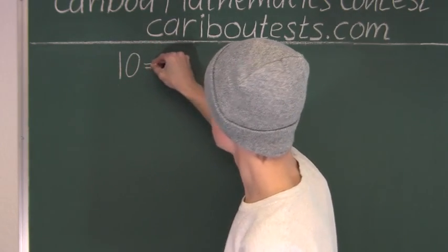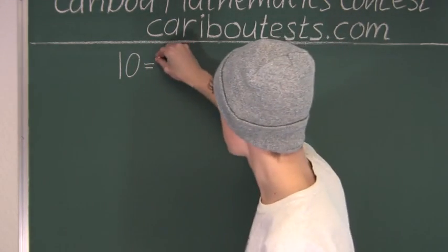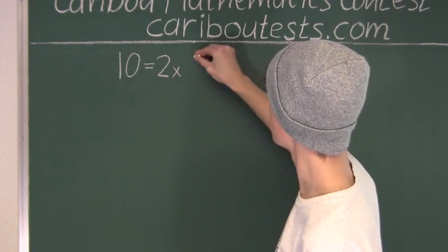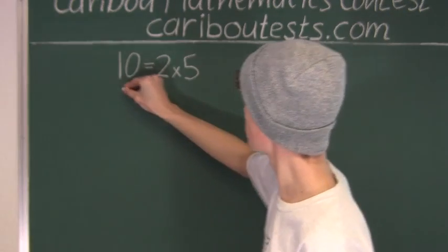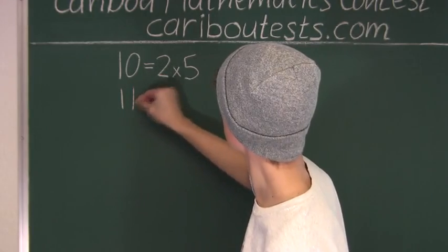Now the prime factorization for 10 is just 2 times 5, because we know that both these numbers are prime.